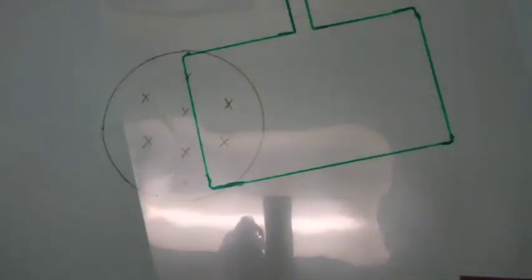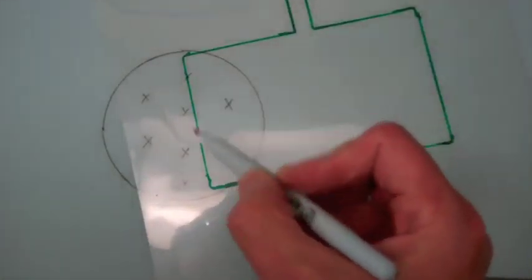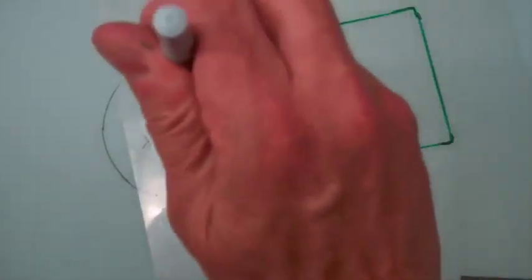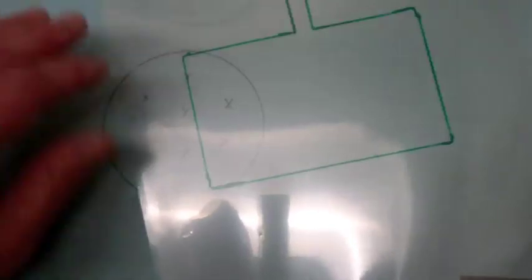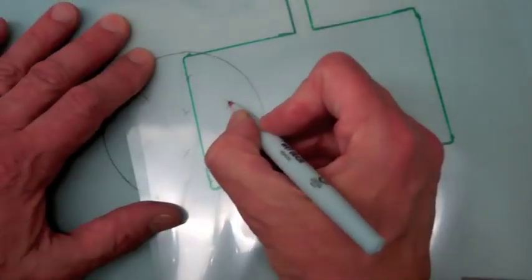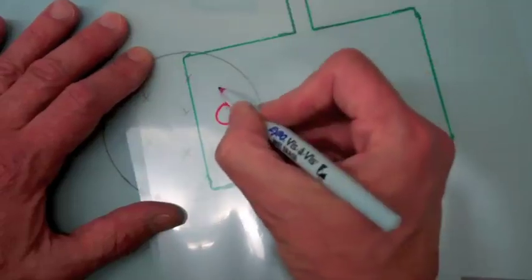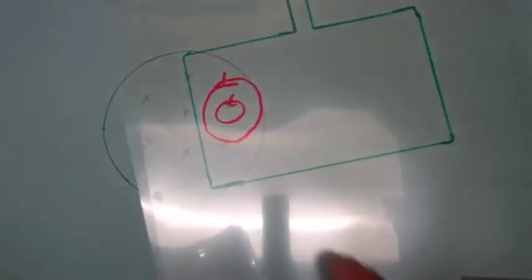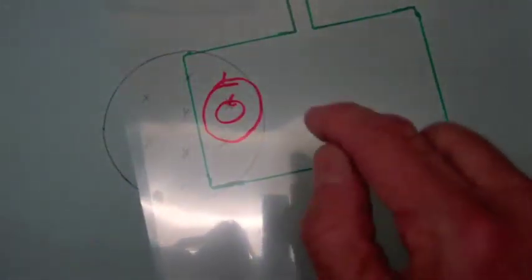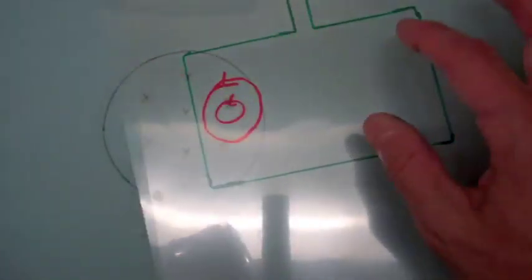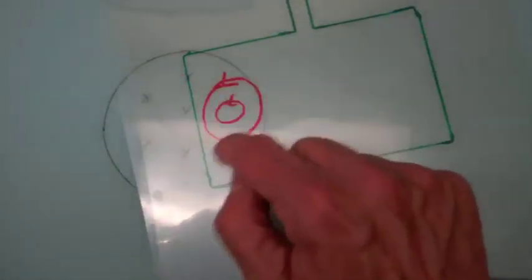So that will be a counter-clockwise circulating current you're going to start to set up here. That's going to generate a magnetic field coming out of the page and opposing the increasing field into the page due to the aluminum sliding into the field.